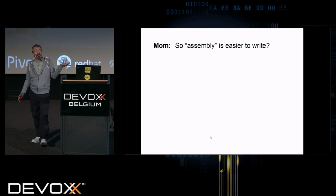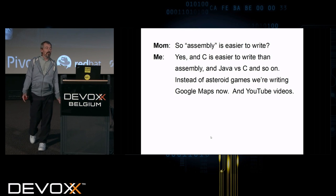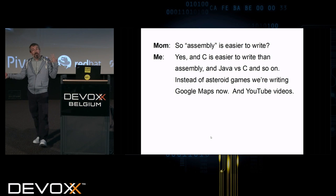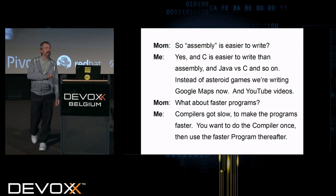So assembly is easier to write? Yeah. C is easier to write than assembly, and Java versus C and so on. Instead of asteroid games, writing things like Google Maps or TensorFlow or YouTube videos of cats. What about faster programs? Yeah. Compilers got slow to make the programs go faster. You wanted to do the compiler once and then do the faster program thereafter.